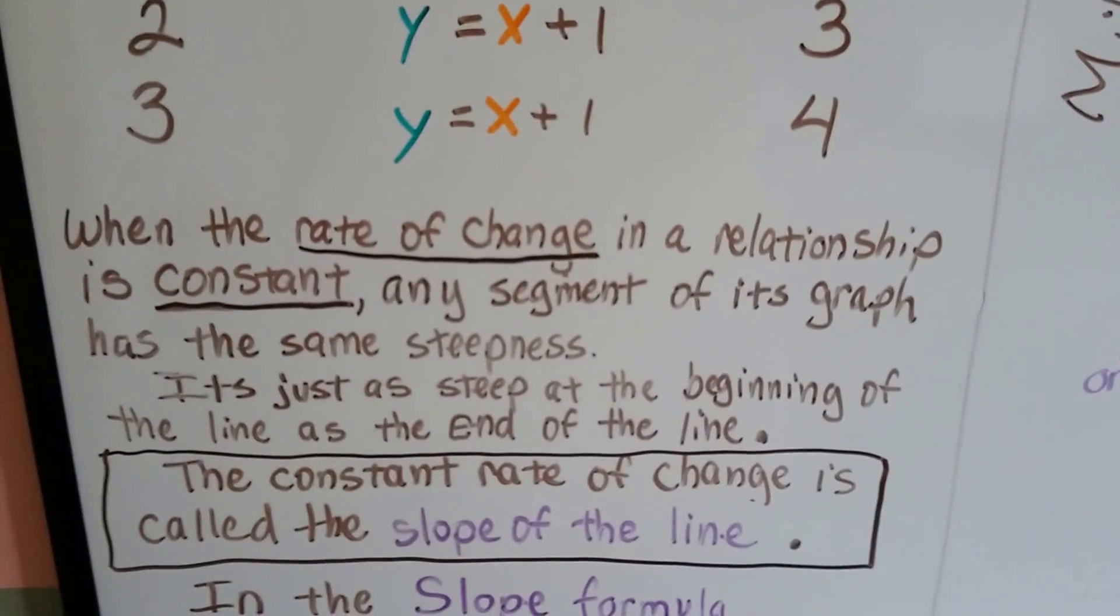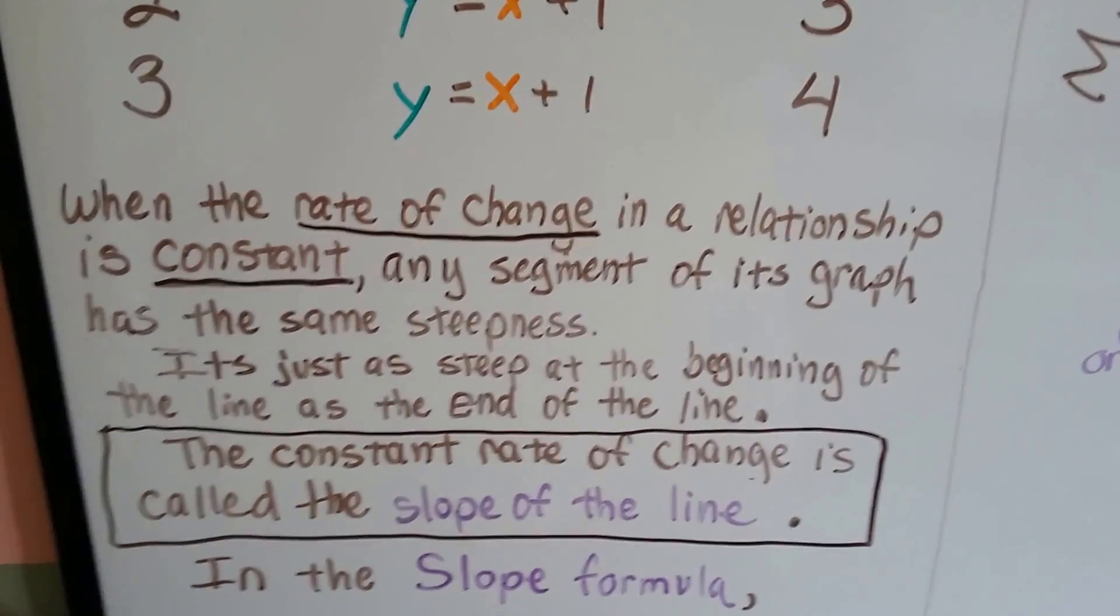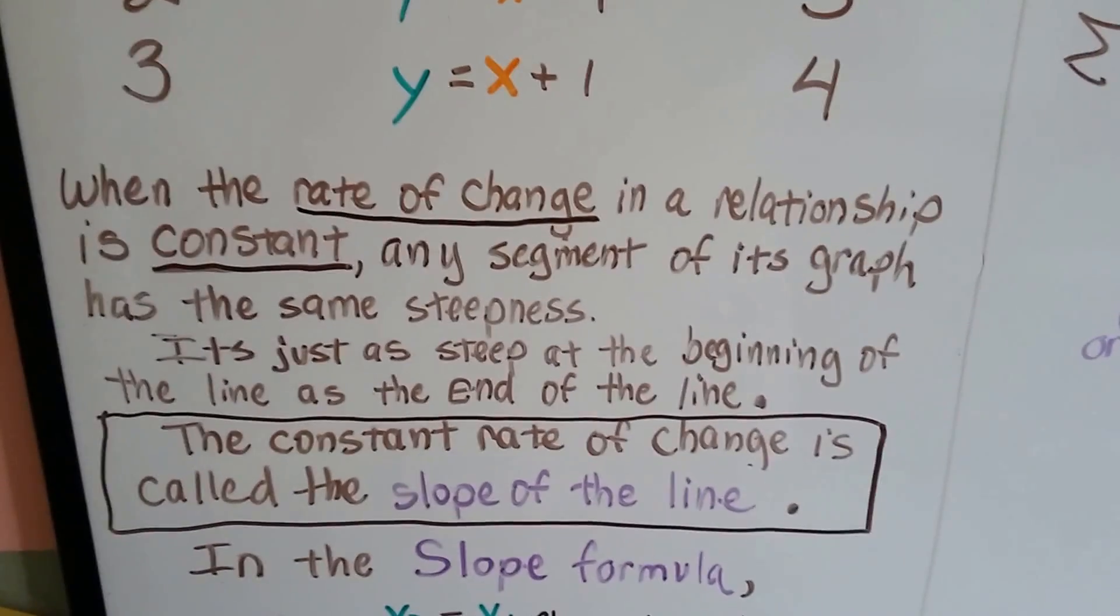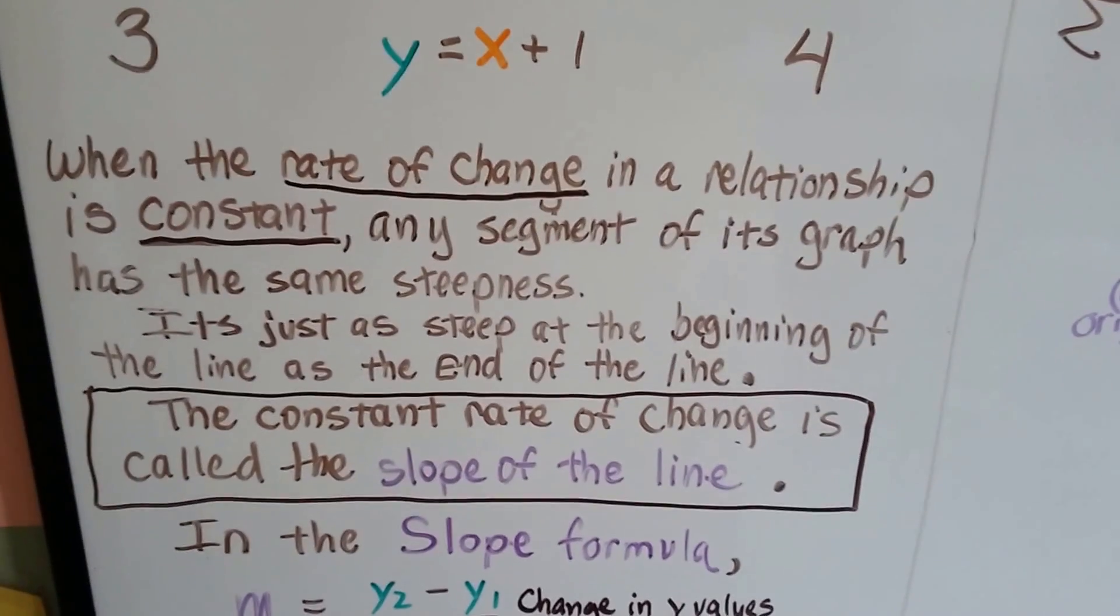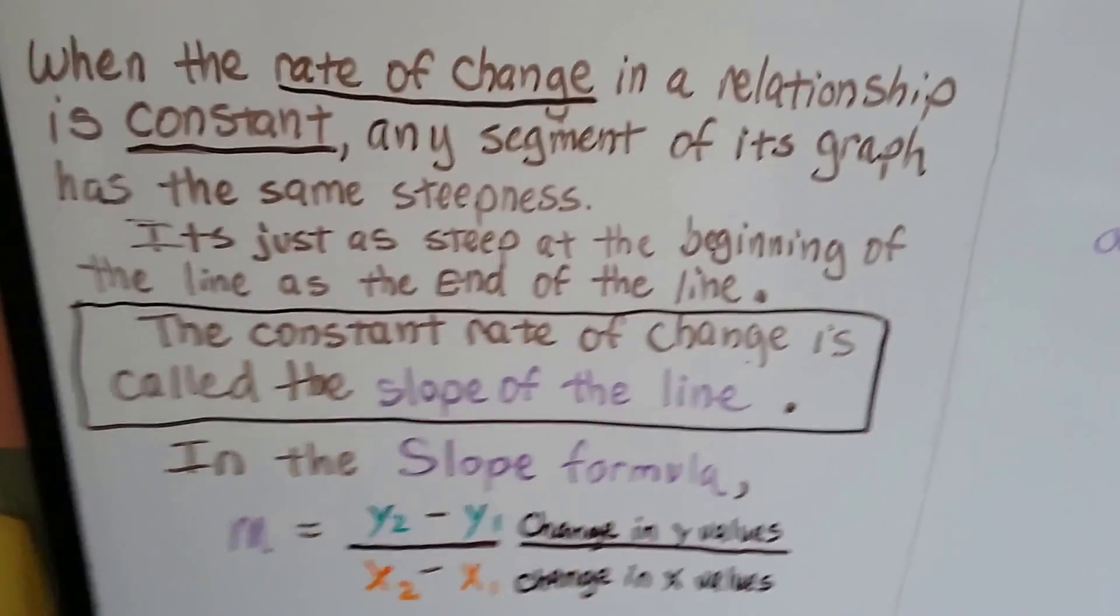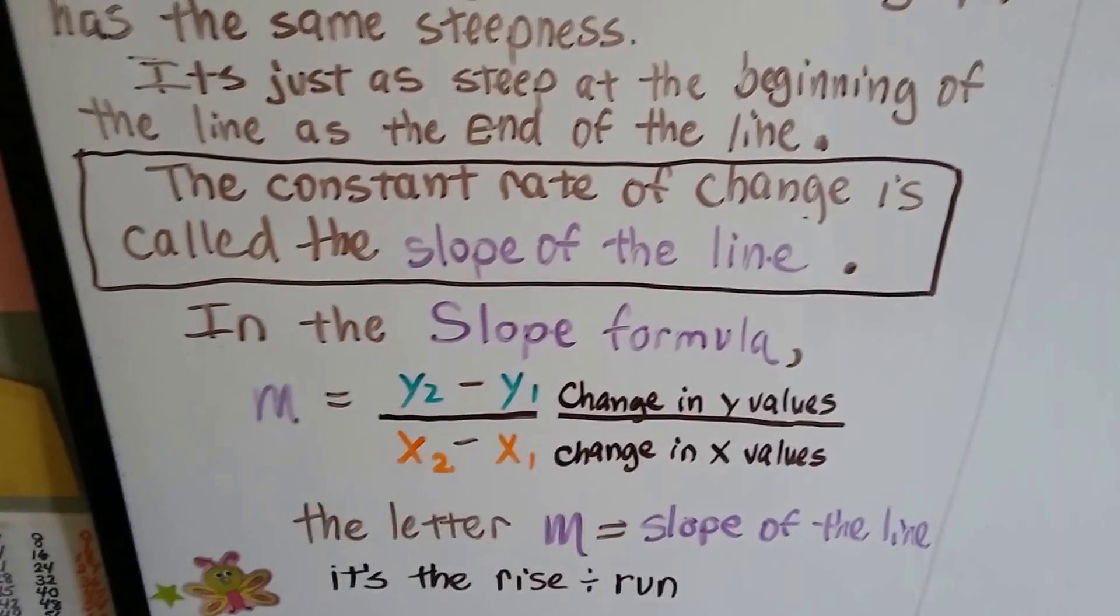When the rate of change in a relationship is constant, any segment of the graph has the same steepness. It's just as steep at the beginning of the line as the end of the line. This constant rate of change is called the slope of the line.